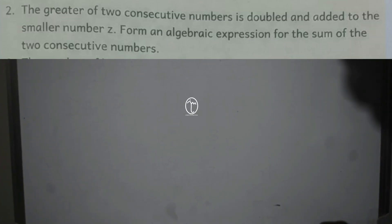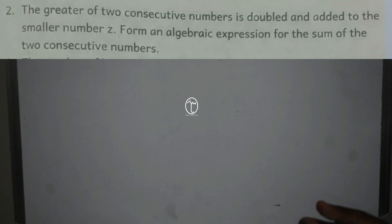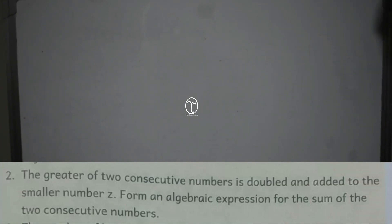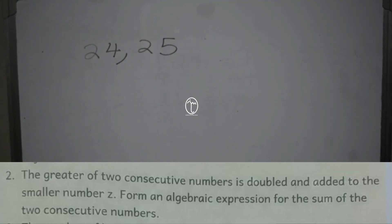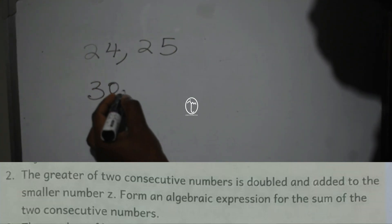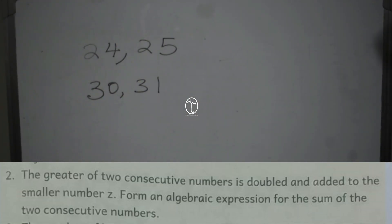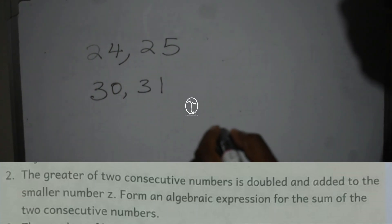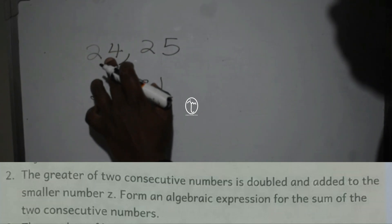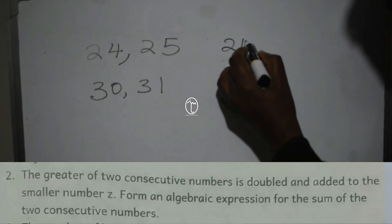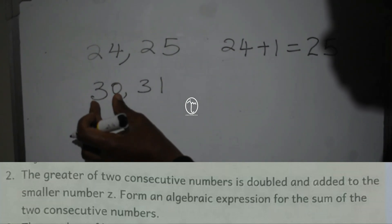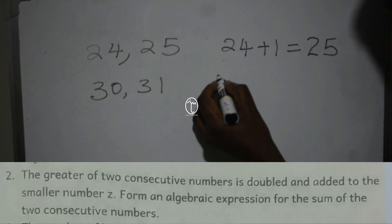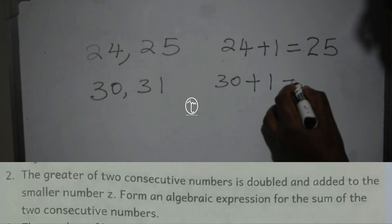Now in the second question, we are told the greater of two consecutive numbers is doubled and added to the smaller number Z. When we talk of consecutive numbers, we are talking of numbers that follow each other, like 24 is followed by 25, or 30 is followed by 31. Numbers that follow each other differ by one. If I have 24 and I want to get 25, I just add one to get the next consecutive number.